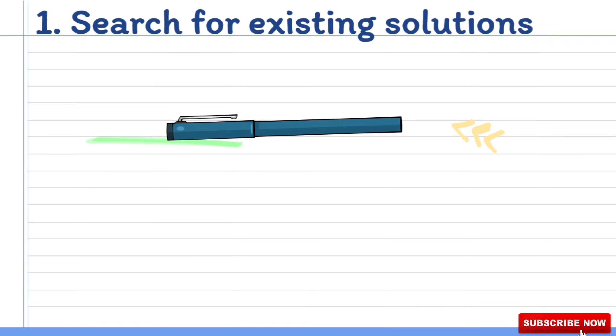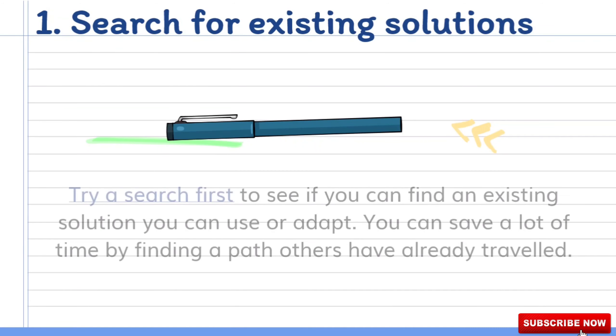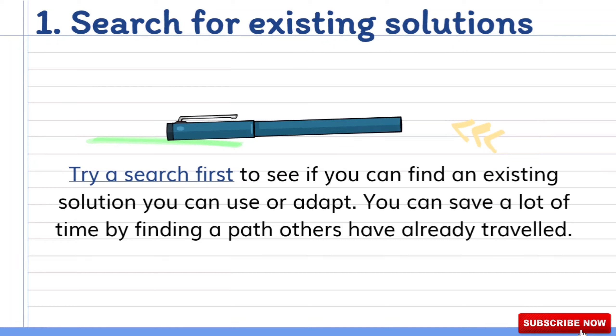Number one: Search for existing solutions. Try a search first to see if you can find an existing solution you can use or adapt. You can save a lot of time by finding a path others have already traveled.